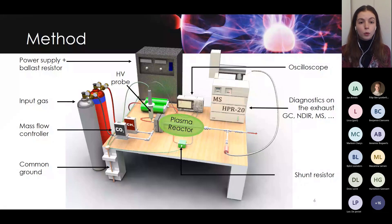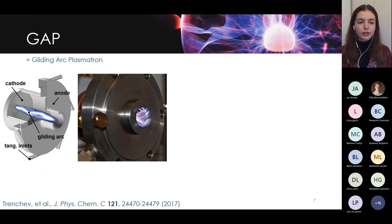Now you know what an experimental setup looks like, let's have a look at some results. This, for example, is the gap reactor or the gliding arc plasmatron. As you can see on the scheme on the left, it has the tangential inlets through which the gas flows and this stabilizes the arc in the center. So, you get a central gliding arc.